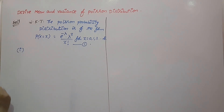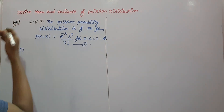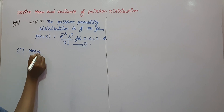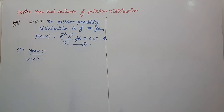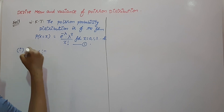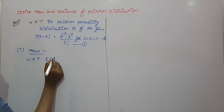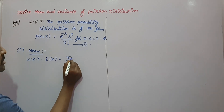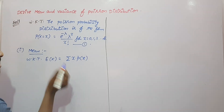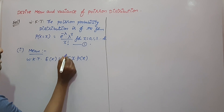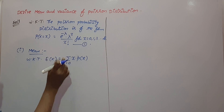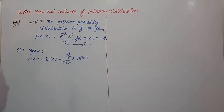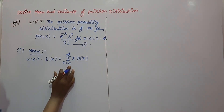First, we have to derive the mean. Mean is also known as expectation. Since x follows the Poisson distribution, x is a discrete random variable. The expectation of x is summation of x times P(x), where x varies from 0 to infinity. In the case of binomial distribution it is only 0 to n, but here it is 0 to infinity.